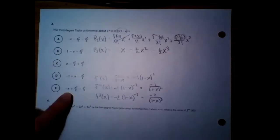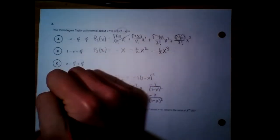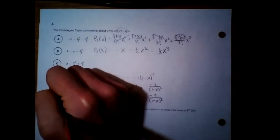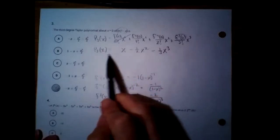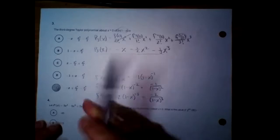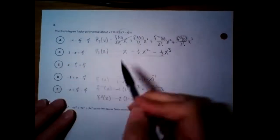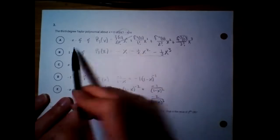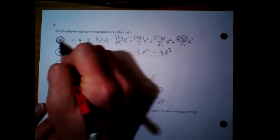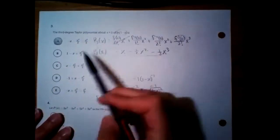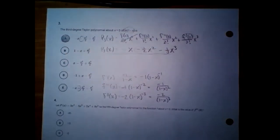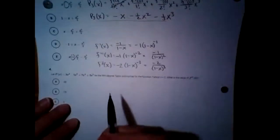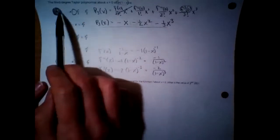Let me see which answer this matches: negative x minus 1/2 x squared minus 1/3 x cubed. I initially thought it was E, but looking at my notes I see I picked the wrong one — I did all the math correct and still picked the wrong answer. This should be negative here, not positive. It's answer A. Be really careful — two of the answers look almost identical, with only this negative versus positive difference. So rude that they make questions like that.